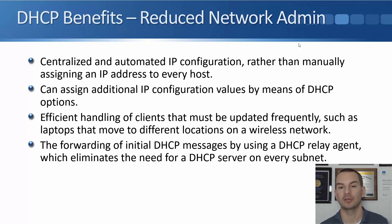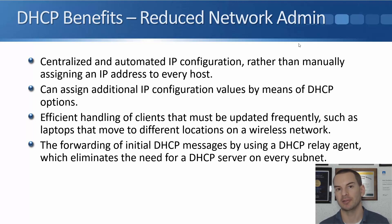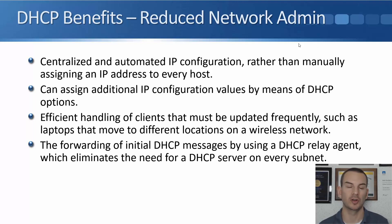The forwarding of initial DHCP messages by using a DHCP relay agent eliminates the need for a DHCP server on every subnet. In a large campus with multiple subnets, you don't need a DHCP server on every single one. You'll have one centralized DHCP server — maybe two for redundancy — with different scopes for the different subnets. Whenever a client comes online, it will automatically be given an IP address for the correct subnet.